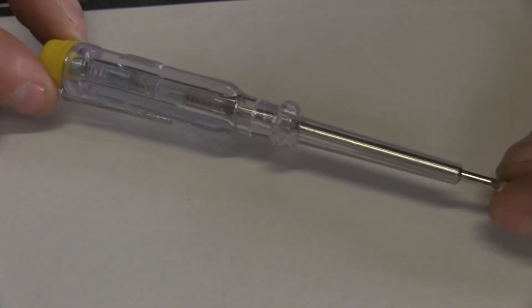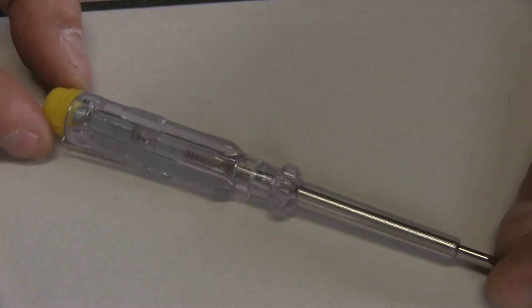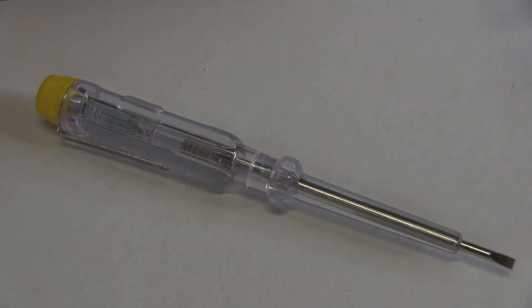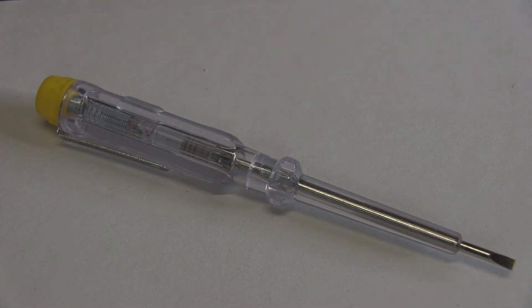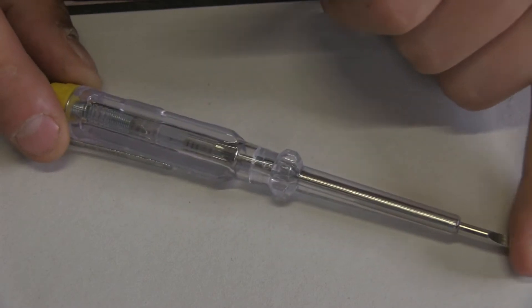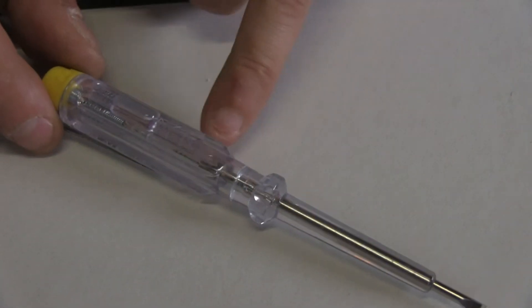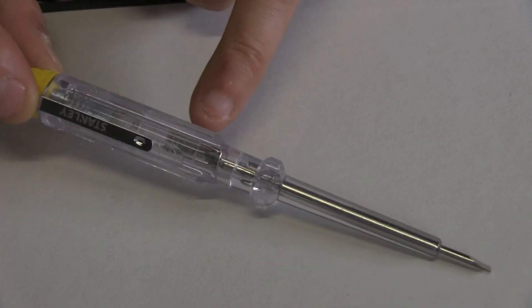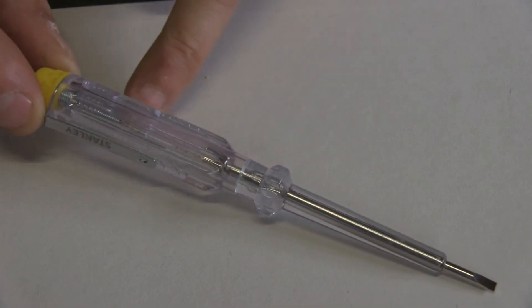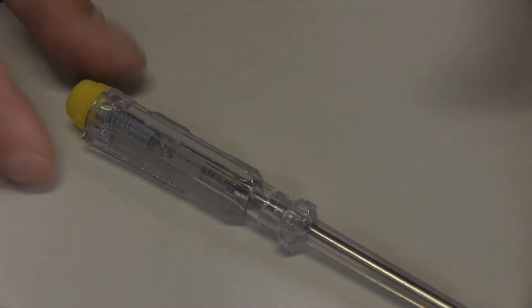You might be familiar with these contraptions here. They are called circuit testers or screwdrivers, and what they are is a conductive tip just right here, a high value resistor which is one mega ohm, a neon light bulb, and on the top you have this eyelet where you touch it.